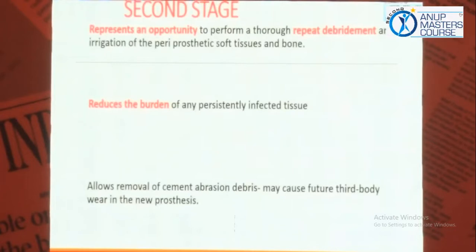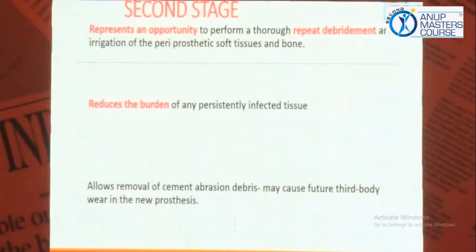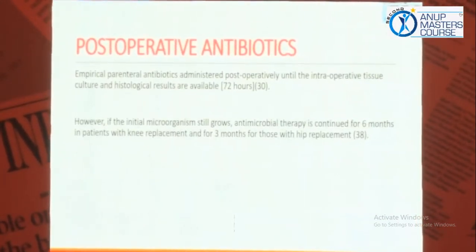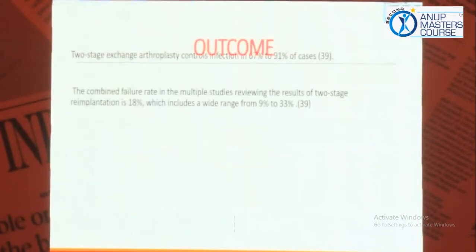When it comes to the second stage of surgery, it is very important to go back again and remove all tissues that you feel might be necrotic. In cases of knee, even if you have to remove the MCL, remove it and go for a hinged knee replacement. The main purpose is to reduce the burden of any persistently infected tissue, and to allow removal of cement abrasion debris. After the second stage revision, some papers say antibiotics should be given for 3 to 6 months. My take-home message: minimum 3 months of antibiotics should be given with close monitoring.